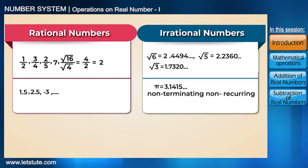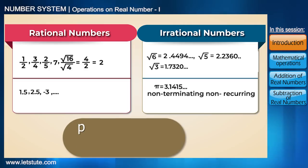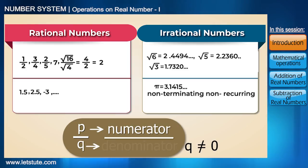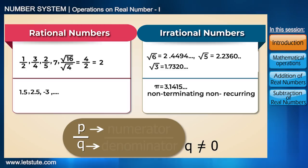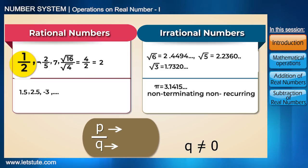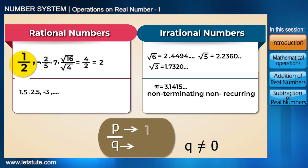A rational number is one that can be written in the form of a ratio p/q of two integers: a numerator p and a non-zero denominator q. For example, 1 divided by 2, where p is equal to 1 and q is equal to 2.